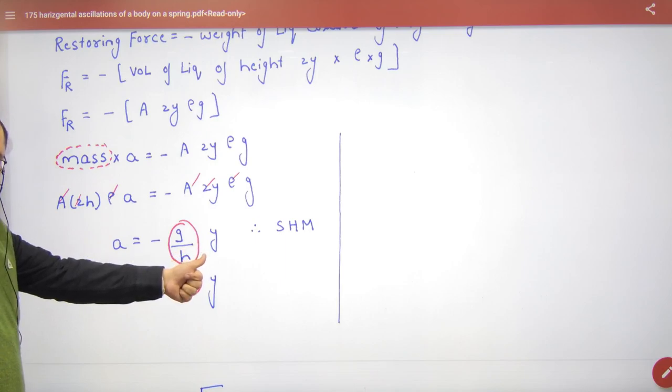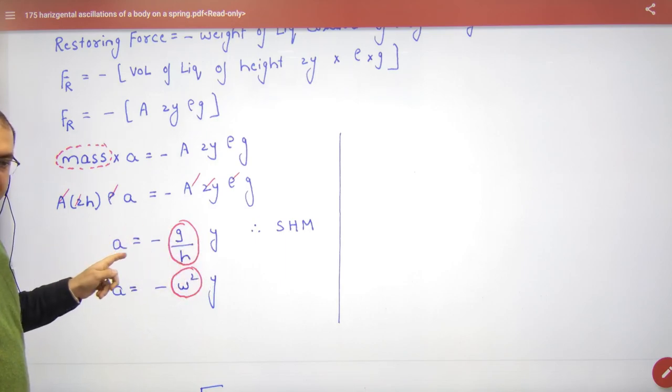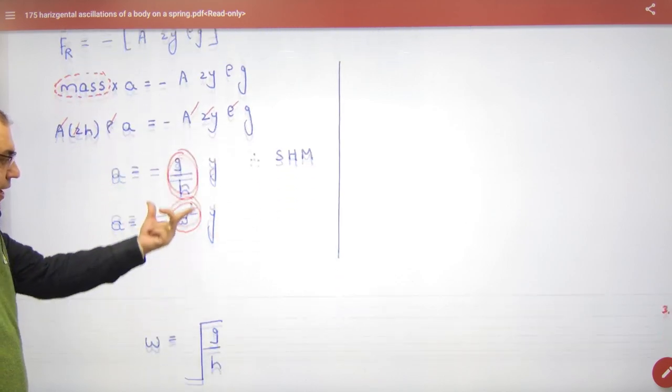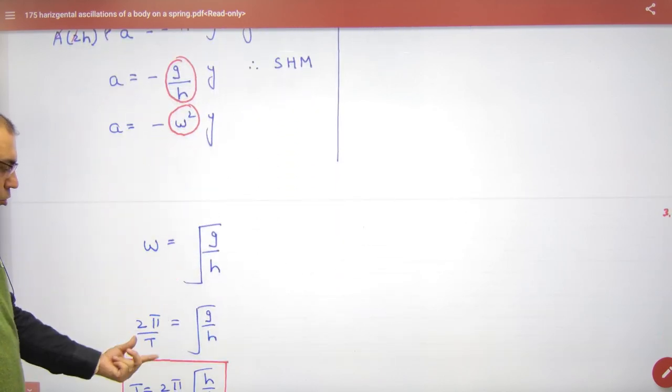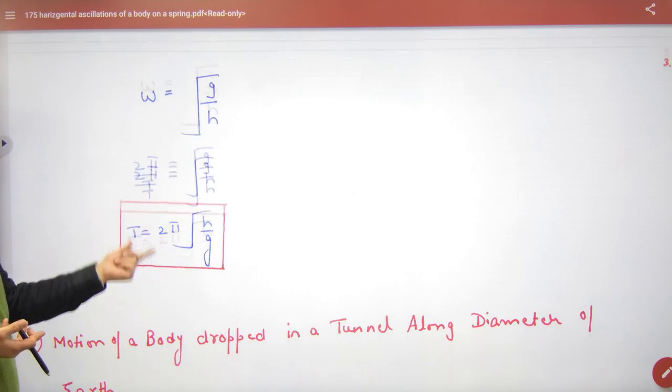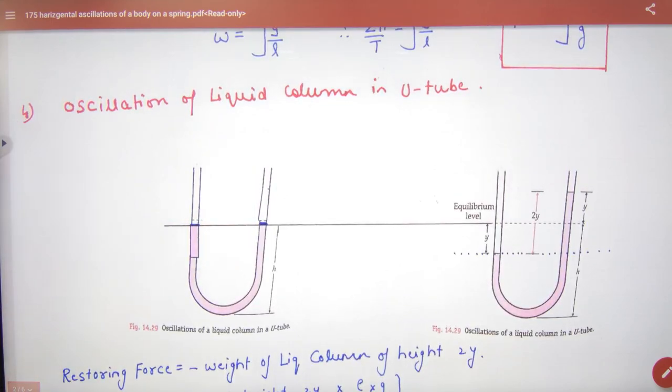So this term has come. So how much liquid was pushed by? y. So acceleration is proportional to displacement with negative sign - SHM. These two are constants. Let's write our SHM equation. Compare and remove omega. Omega equals 2π by T. So compare and remove time period. Time period is 2π√(h/g). H means the initial height, the time period is dependent.